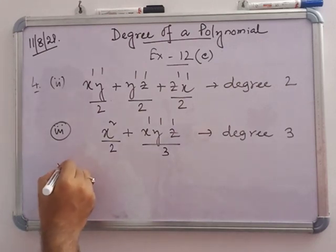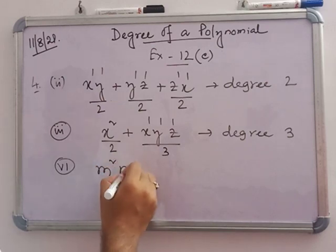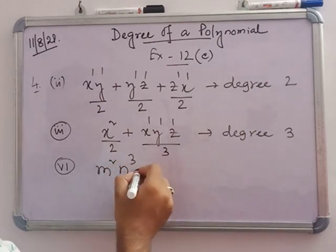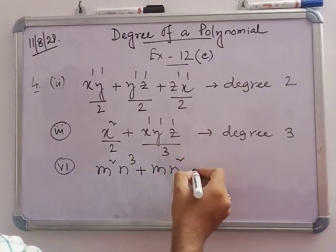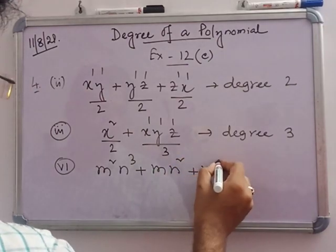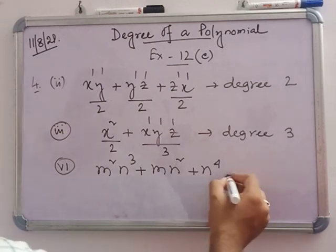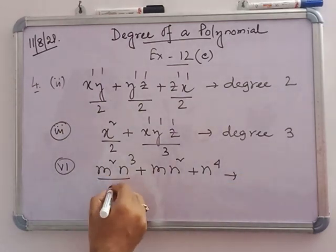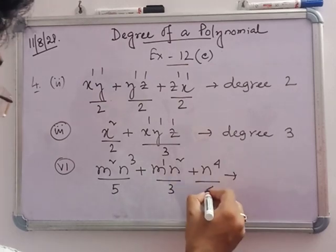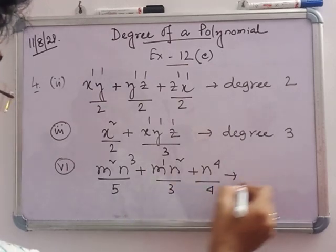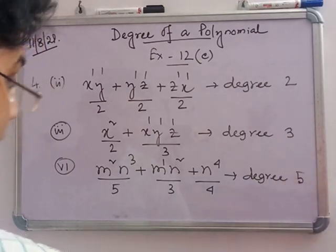Number 6: n squared times n cubed plus mn squared plus m to the power 4. The sum of powers for the first term is 2 plus 3 equals 5, for the second term is 1 plus 2 equals 3, and for the third term is 4. So the degree is 5.